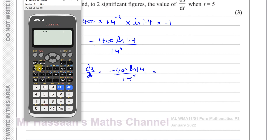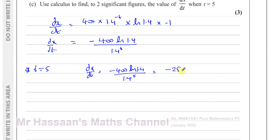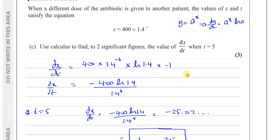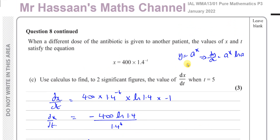Substituting t equals 5: dx/dt equals minus 400 times ln 1.4 divided by 1.4 to the power of 5. That gives minus 25.024, which to two significant figures is minus 25. So when t equals 5, dx/dt equals minus 25. That's the answer to part c, completing question eight on exponential logarithms.